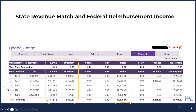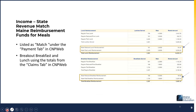Now I'll move to the claims tab in CNPweb to see the amounts broken out for breakfast and lunch for the state match category. The summary shown here is found on the claims tab by clicking on the dollar icon. Lunch is listed first — listed is $64.40 for reduced meals and $9,259.25 for lunch paid meals, for a total of $9,323.65. This amount can now be entered in the worksheet on the state revenue match line for school lunch. The same process is used for breakfast, with those totals adding up to $3,336.80, which is entered on the state revenue match line for breakfast.